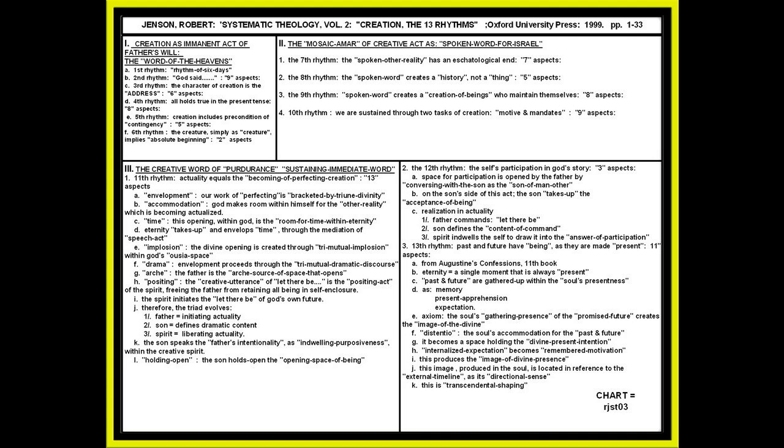Now we reach the third moment of perdurance, which is a word Jensen got from Luther, the permanence and endurance, the perdurance of creation. And we're going to take a look at this third moment. We're going to add rhythms 11, 12, and 13. We're going to add three rhythms.